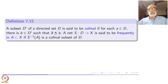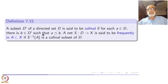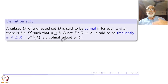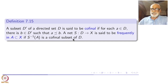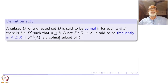If you have a net from D to X, it will be called frequently inside a subset A of X if S inverse of A is a co-final subset of D. Given A inside D, I must get a B inside D prime such that B follows A and S of B is inside A. This is somewhat weaker than eventually inside A — eventually constant is much stronger than just having a subsequence being there.